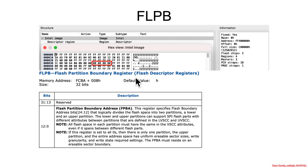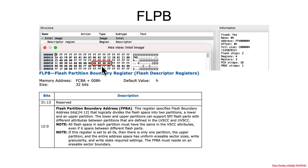Next there's the flash partition boundary register, and you can see this has a value of 000800. We showed a picture before saying you could partition a single flash chip, but more often it's used for partitioning between two flash chips — and we do indeed have two flash chips. The first is eight megabytes, and this value is interpreted as bits 24 through 12, basically saying the boundary is an eight-megabyte boundary for flash partition zero versus one.